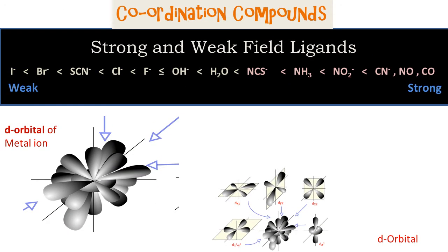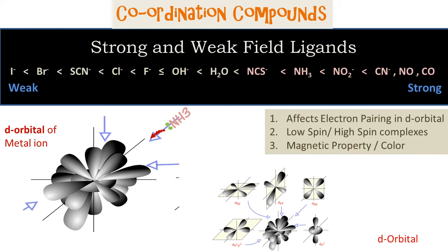When a strong ligand with a lone pair approaches the central metal ion, it affects the electron pairing in the d orbital of the metal ion. This in turn affects the properties of the coordination compound, like the spin of the complex, its magnetic property, and its color.